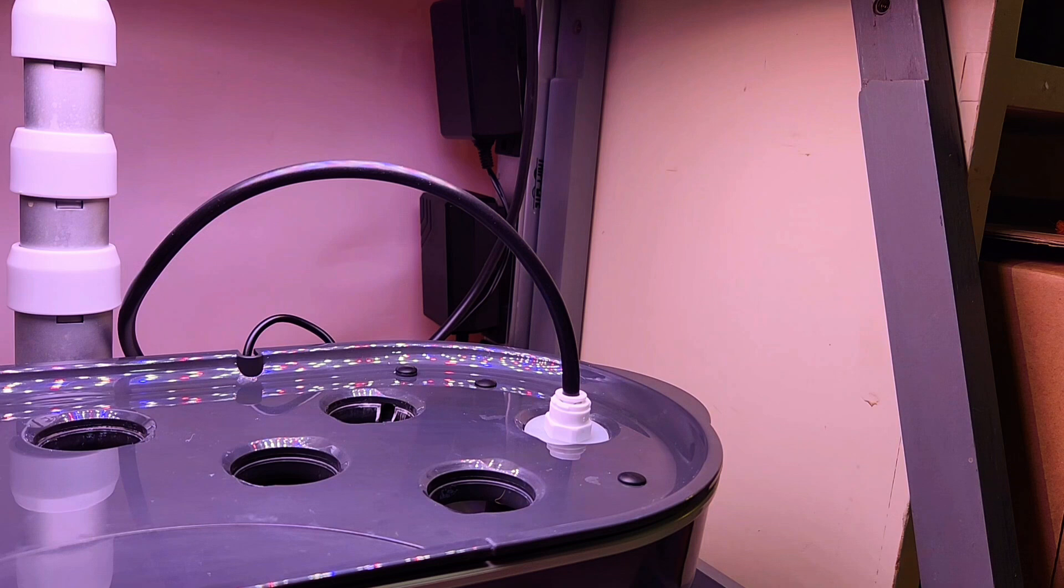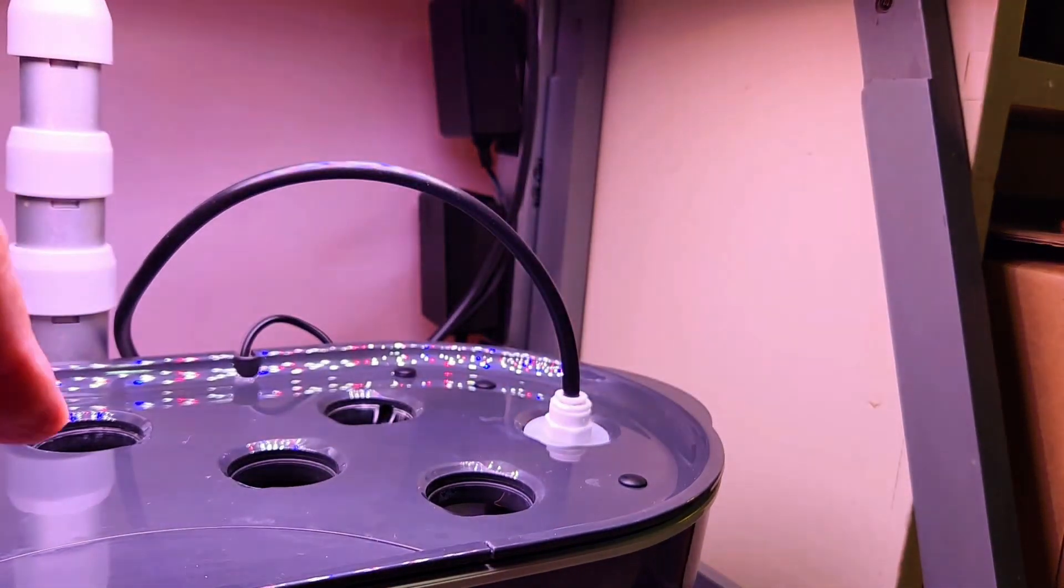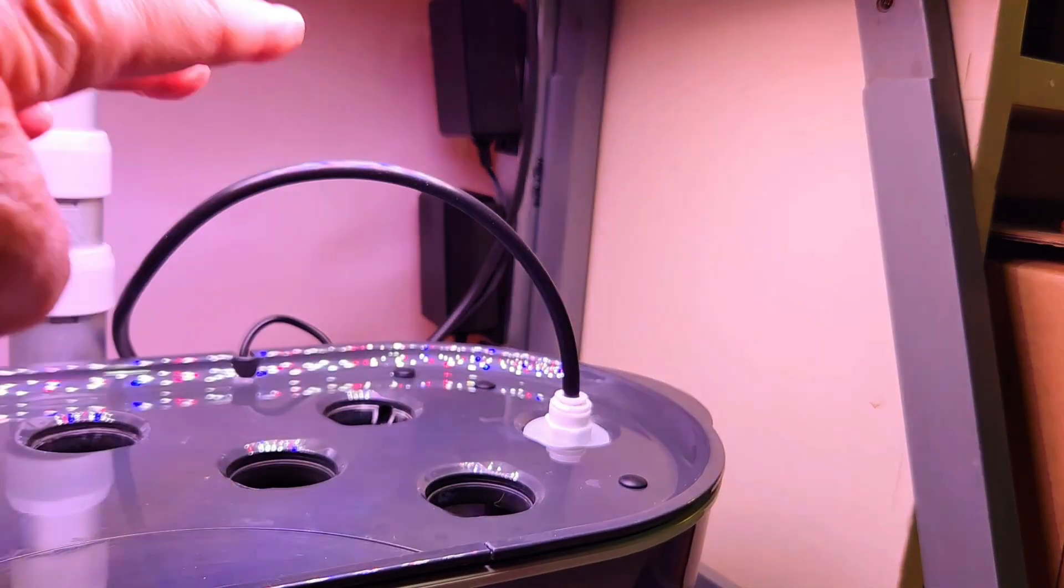Notice that there's no drilling through the side of the AeroGarden reservoir to put this together. The tubing that we were working with comes down, it's sitting up above that reservoir, and it's draining down through the tubing and it runs into the valve.